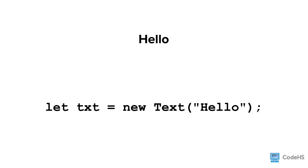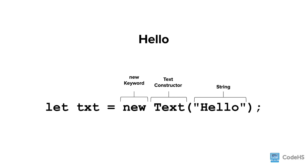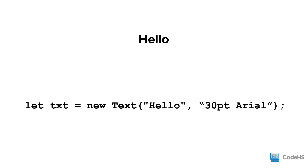To create a text object, we write the new keyword and the Text constructor. Between the parentheses, we write a string of the text you want to add to the canvas. And to be able to refer to the text, we will store it in a variable. We can also determine the size and font of the text by adding a comma and, in quotes, the size and font name.